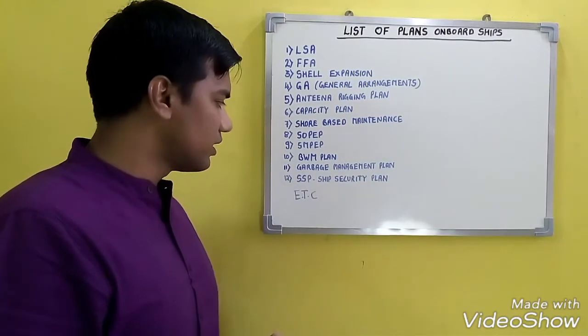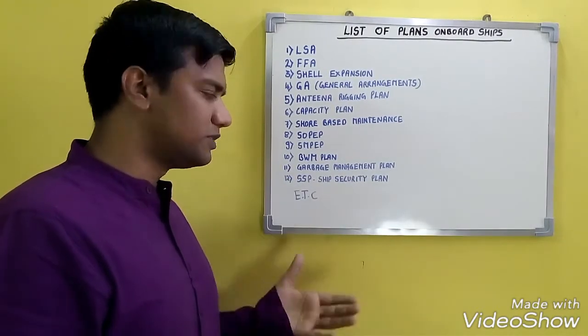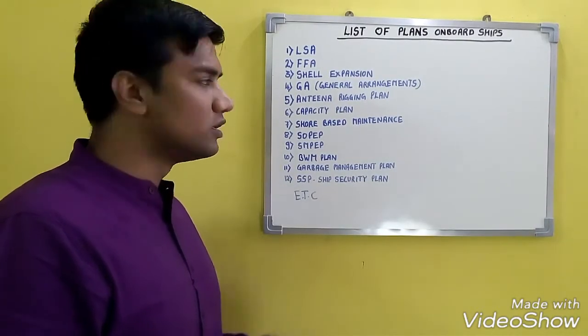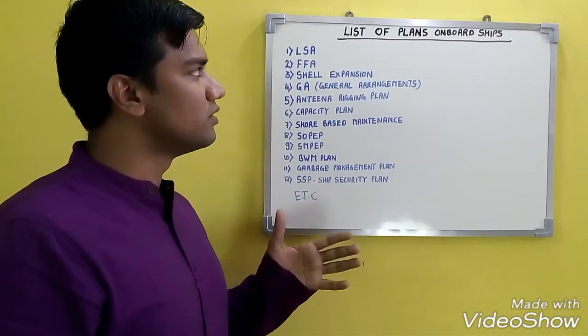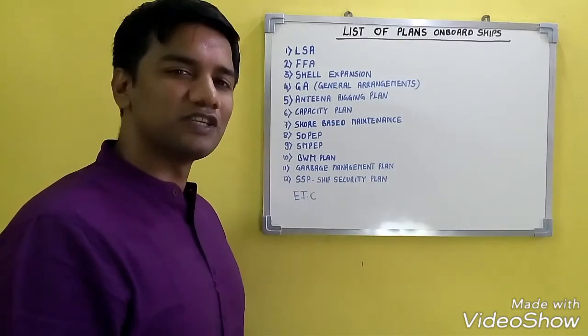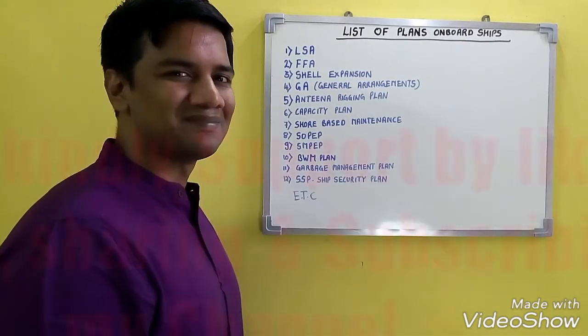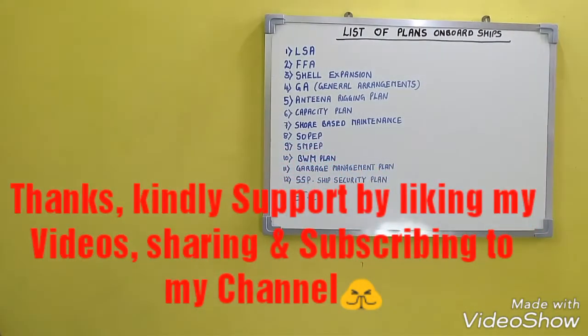The ballast water management plan is a new plan introduced after the Ballast Water Convention. The garbage management plan and the ship security plan round out the various plans present on board ship.